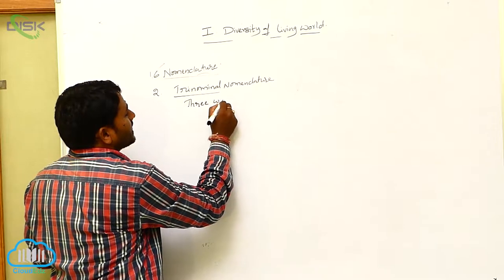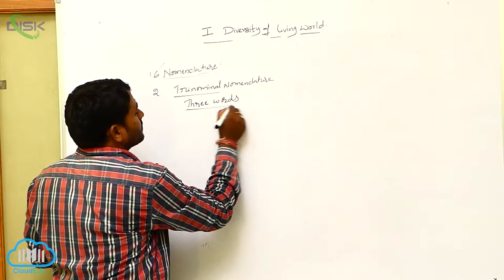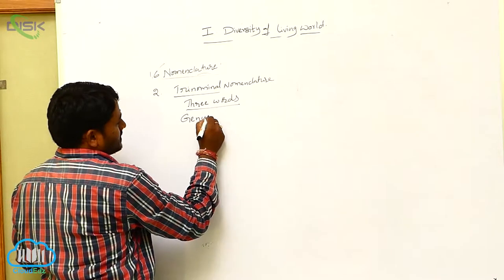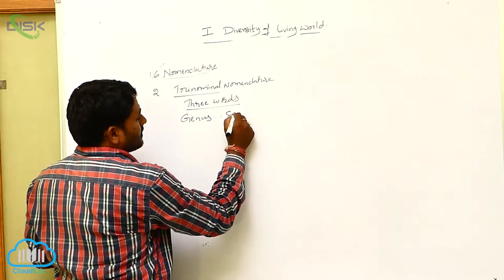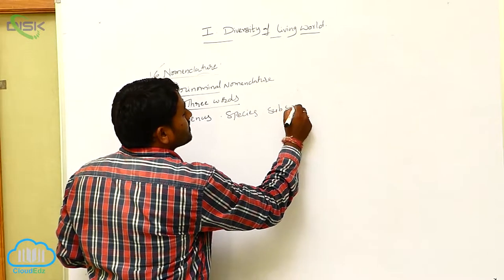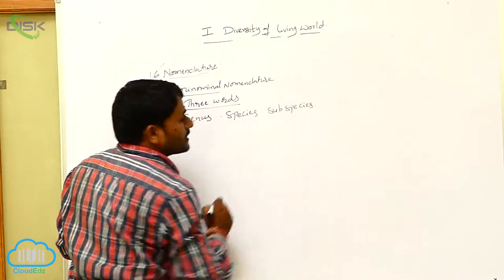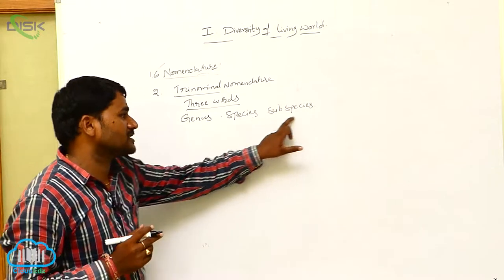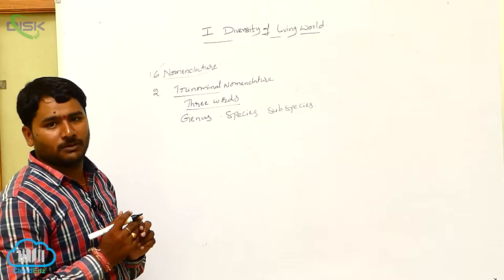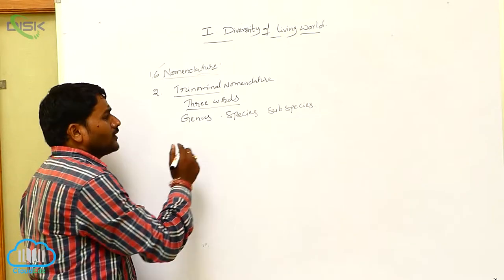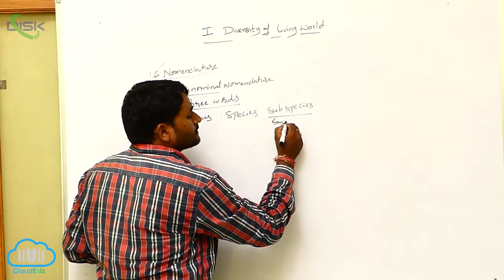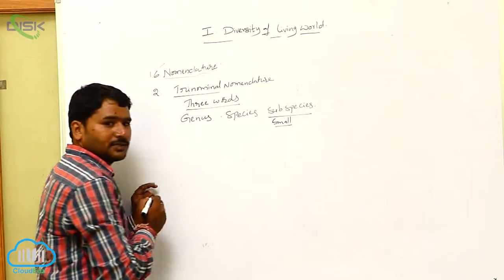How many words are present in the scientific name? Three words. The first one is the genus, the second one is the species, and the third one is the subspecies. The subspecies is the only addition to binomial nomenclature, and it also starts with a small letter.